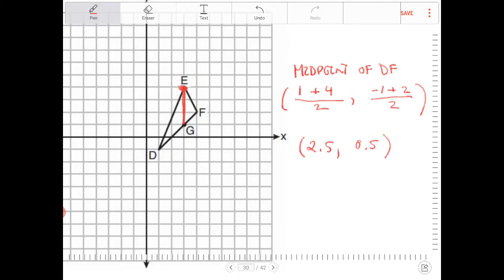This is where the median is supposed to land. G, on the other hand, is (3, 1). So G is not a point on the median.